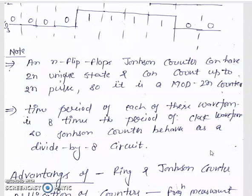The most important feature of this counter is its number of unique states: 2n. In a ring counter the number of states is only n, so each state frequency equals the total frequency ft divided by n. In the Johnson counter, each state frequency equals ft divided by 2n. For this 4-bit Johnson counter, 2n = 8, so it is called a divide-by-8 circuit.